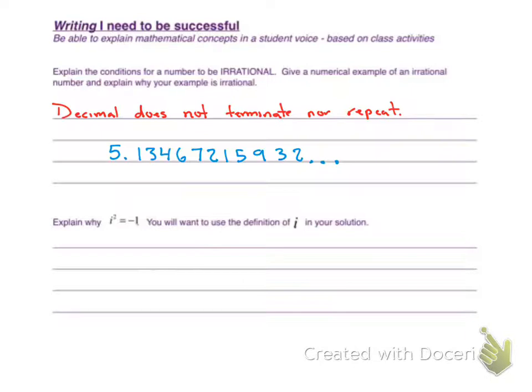And the last problem we have on our study guide here, explain why i squared equals negative one. You will want to use the definition of i in your solution. So we know we've got to use the definition of i in our solution. We know that i equals the square root of negative one.